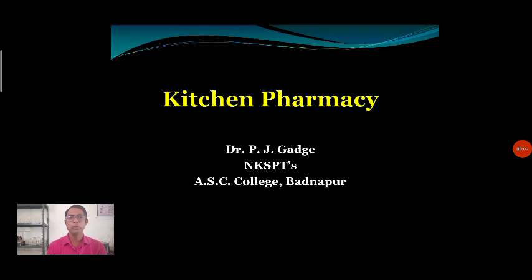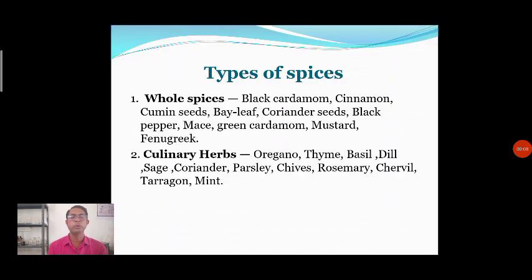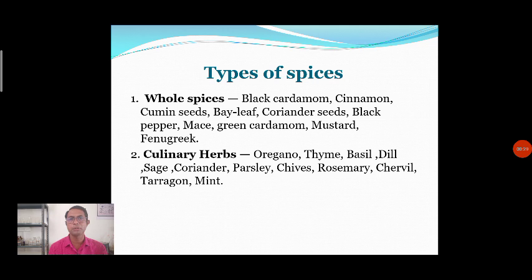Hello students. We have already started the portion that is kitchen pharmacy, and in this context we are going to see the different parameters involved in kitchen pharmacy. In the last lecture we discussed the types of spices. On a primary level there are two main types: whole spices and culinary herbs.